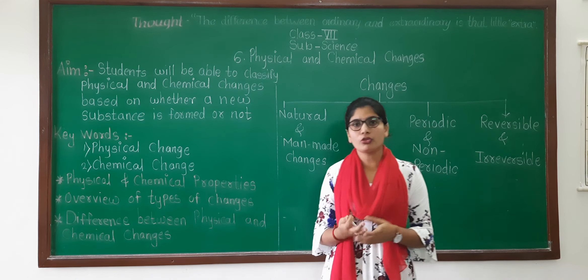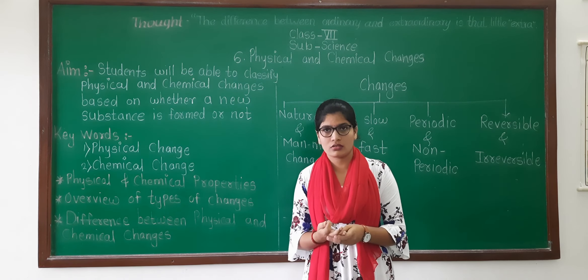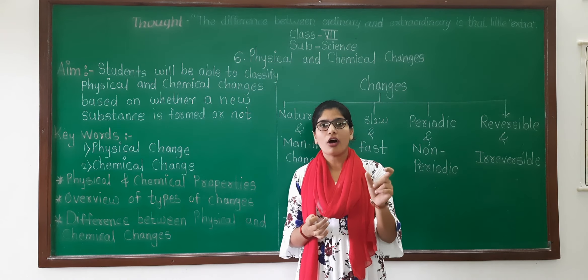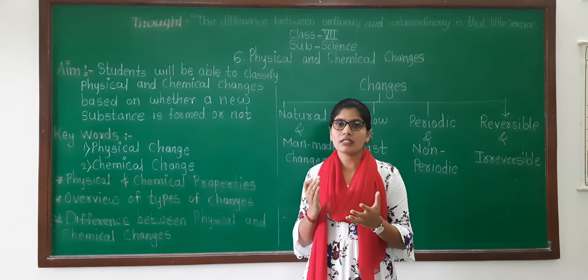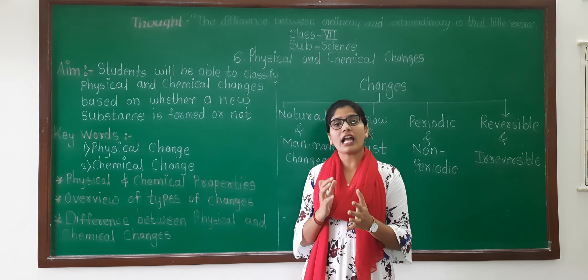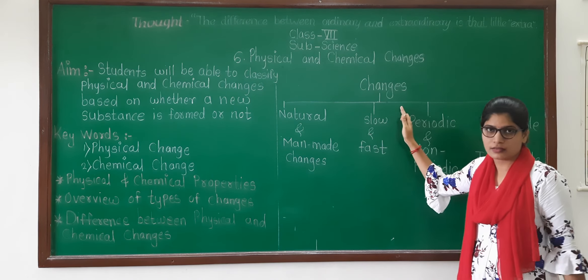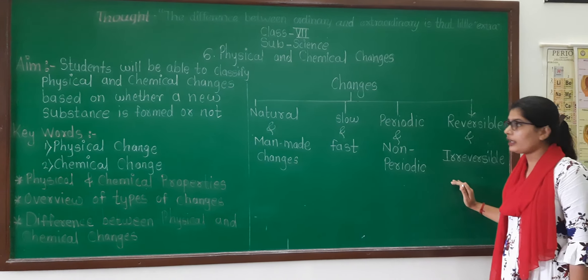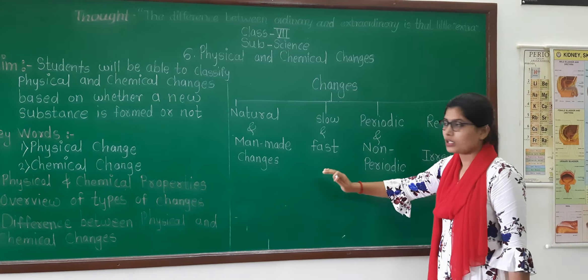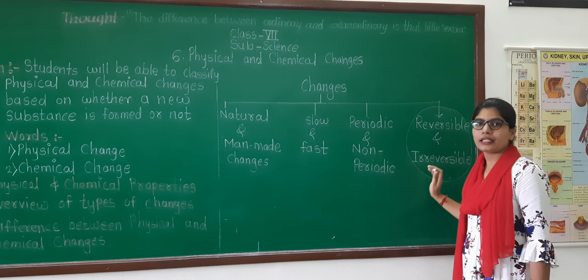Ripening of fruit is a natural change, and that fruit is taking more time to ripen, so it is also a slow change. I have written four types of changes — four groups: Natural and Man-made, Slow and Fast, Periodic and Non-periodic, and Reversible and Irreversible. The reversible and irreversible changes are important, and we are going to learn about those in Physical and Chemical Changes.